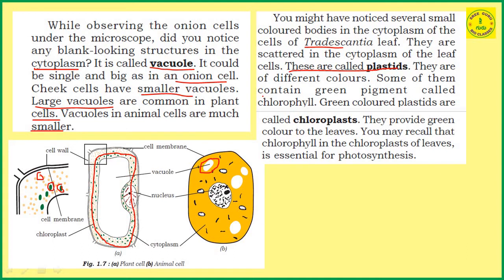Some of them contain a green pigment called chlorophyll. They provide green color to the leaves. In addition to this green color, these chlorophylls are also involved in the process of photosynthesis.